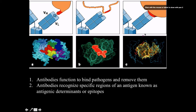Antibodies have a seemingly infinite variation in the ways they can combine those antigen binding sites — they can bind to pathogens and toxins in many different ways. This variation lies between the variable heavy chain and variable light chain domains, and antibodies use this to recognize and remove pathogens or toxins.